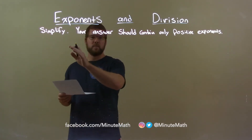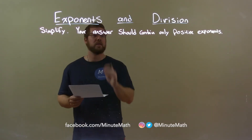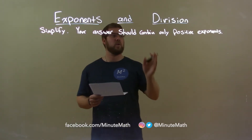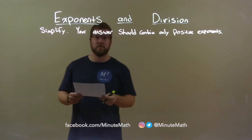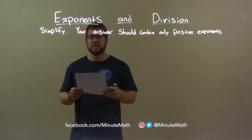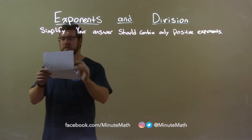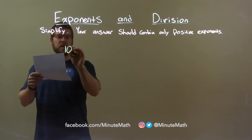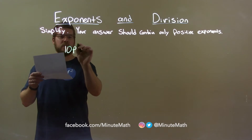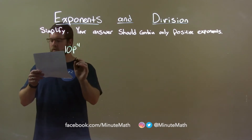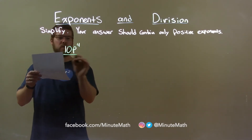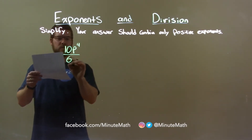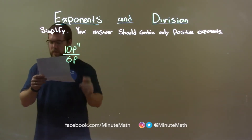Today we're learning about exponents and division. We're going to simplify, and your answer should contain only positive exponents. So, if I was given this problem: 10p to the fourth power over 6p.